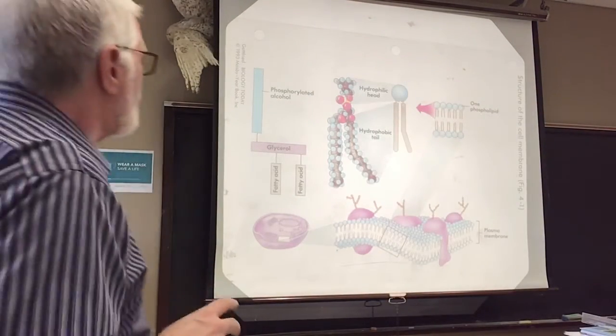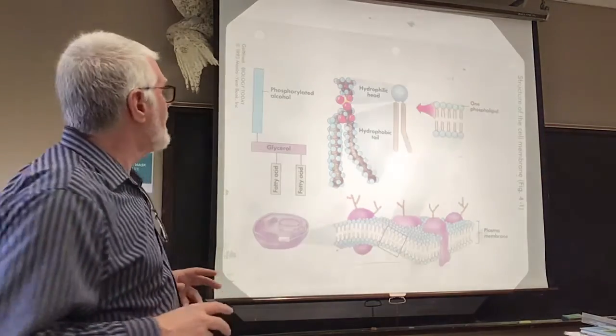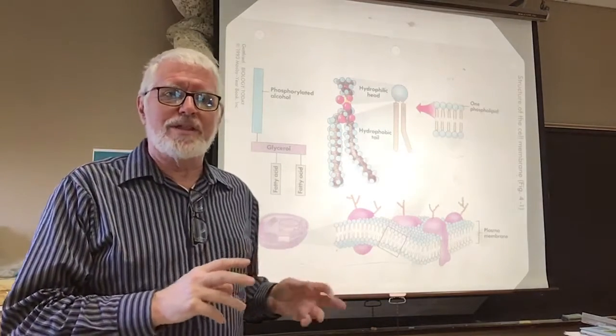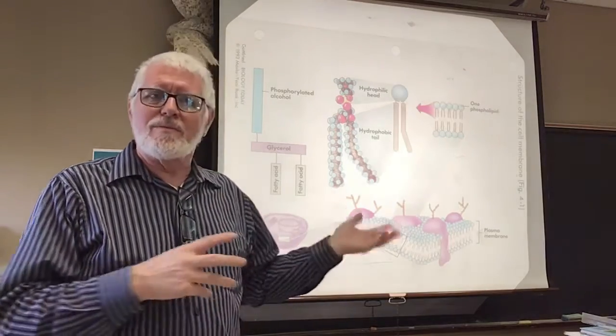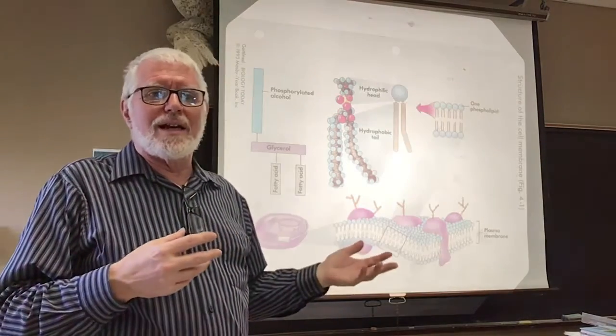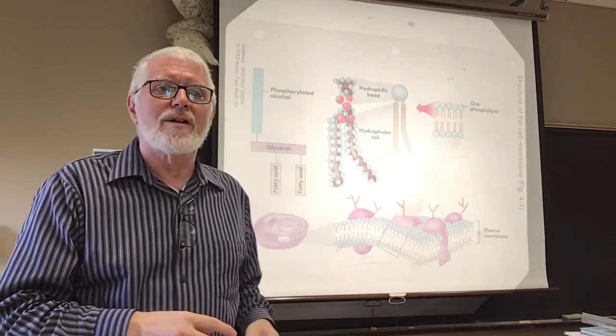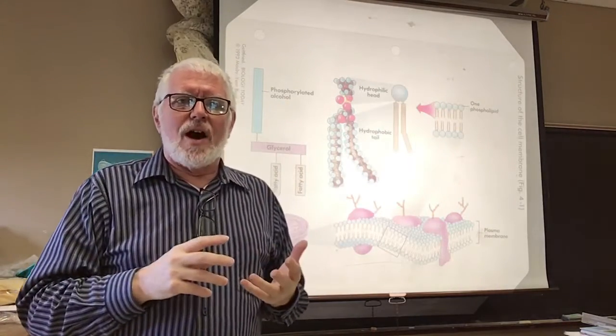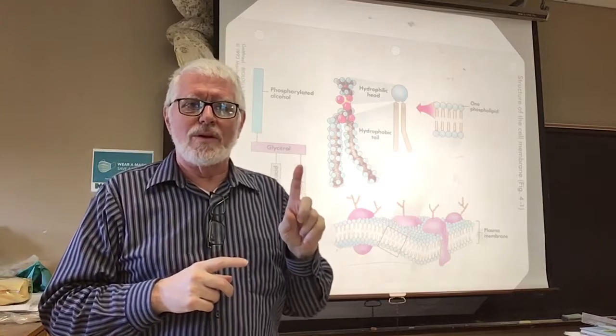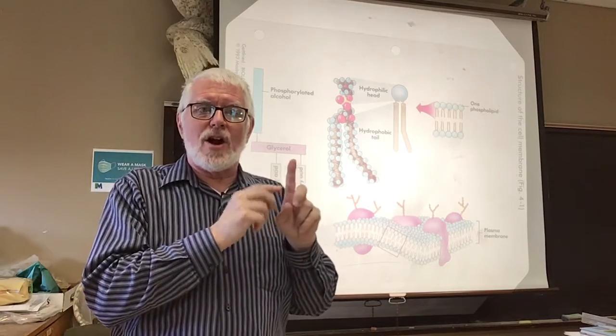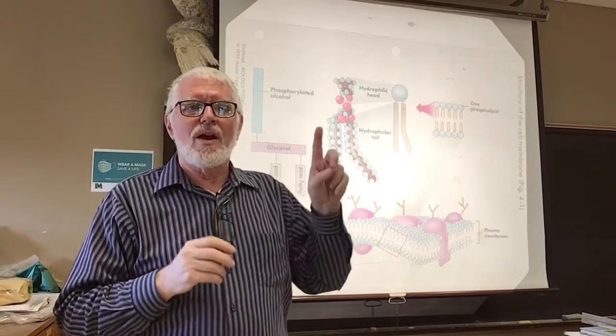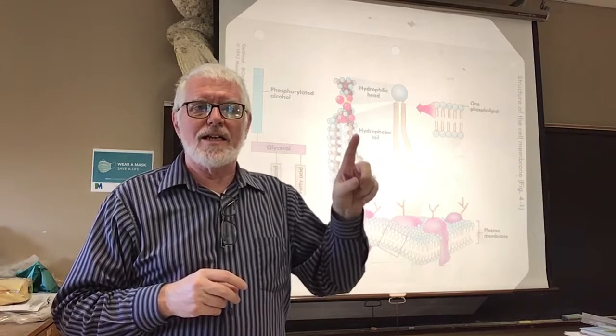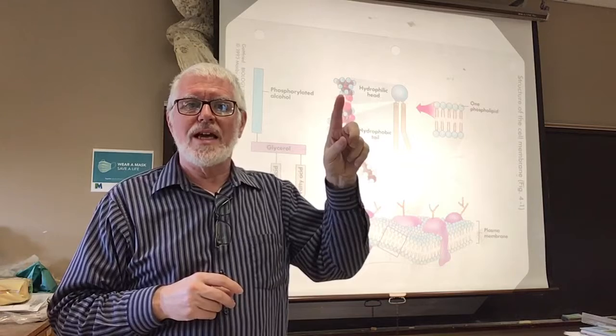A cell membrane is two layers of molecules kind of tail to tail. They are sort of lipids but not quite lipids, they're called phospholipids. Think back, lipids are a little core molecule glycerol with three carbons on it and each carbon has a fatty acid attached to it. Well this pink thing here is the glycerol and here's a fatty acid and here's a fatty acid, but on one of the carbons is a phosphate group.